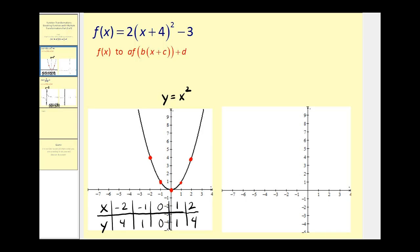On this first function we have f of x equals two times the quantity x plus four squared minus three. The first thing we should recognize is that the parent function would be y equals x squared. The graph is already provided here, because the idea behind graphing transformations is that you know how to graph the parent functions. I've already provided a t-table with several values that we can use in order to transform this function into the given function.